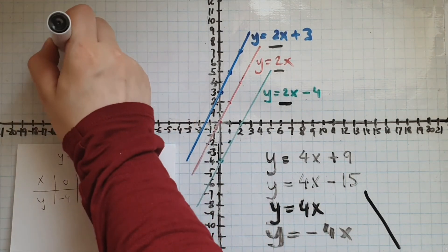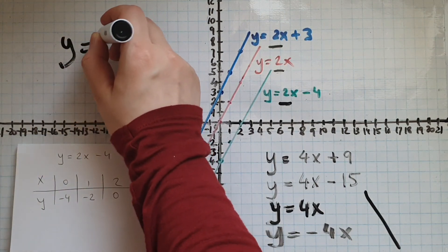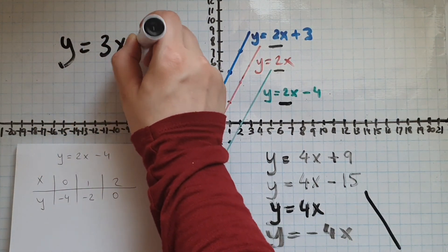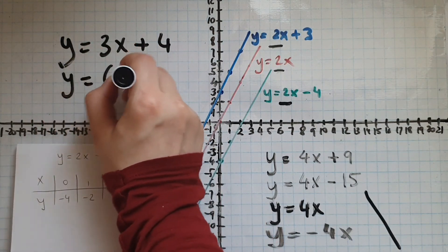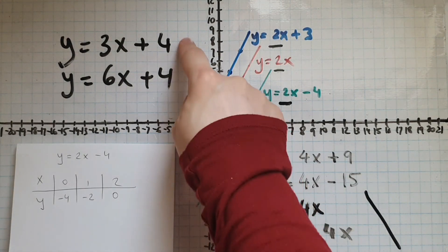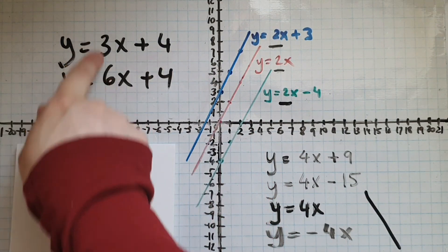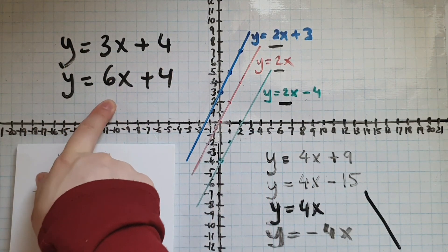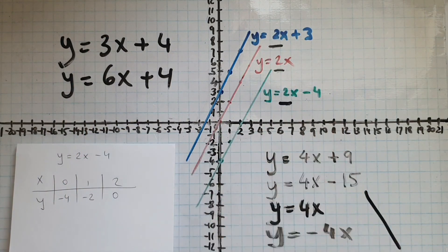What about y equals 3x plus 4 and y equals 6x plus 4 — are they parallel? No, they're not. They have the same y-intercept, but they've got different gradients. And the gradient determines whether the lines are parallel.